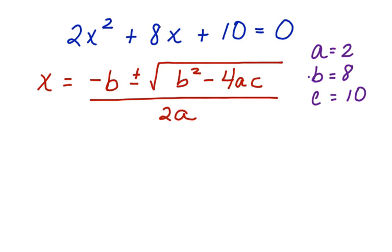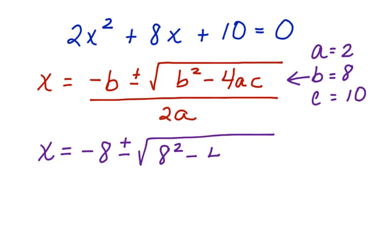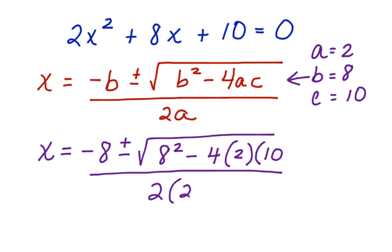Now we're going to substitute these values into the quadratic equation and solve for x. So here we have x equals negative b, which is negative 8, plus and minus the square root of 8 squared minus 4 times 2 times 10 divided by 2 times 2.